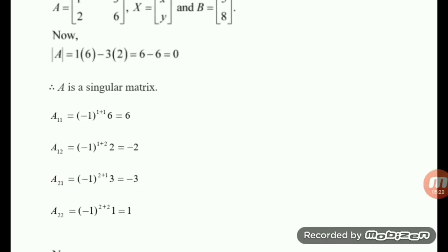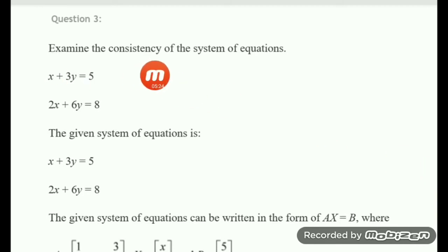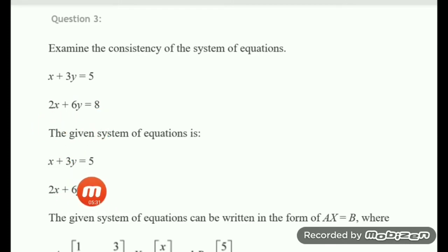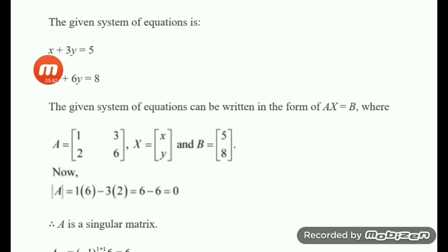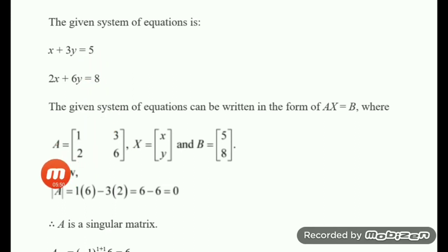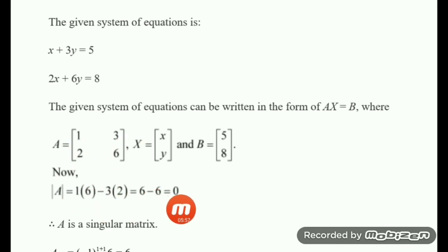Now let us go to Question 3: examine the consistency of x plus 3y equal to 5 and 2x plus 6y equal to 8. Put it in matrix form AX equal to B. A is the coefficient matrix with first row 1, 3 and second row 2, 6. The determinant of A equals 1 into 6 minus 3 into 2, which is 6 minus 6 equal to zero. So A is singular; the system may or may not be consistent, so we need to find the adjoint of A.